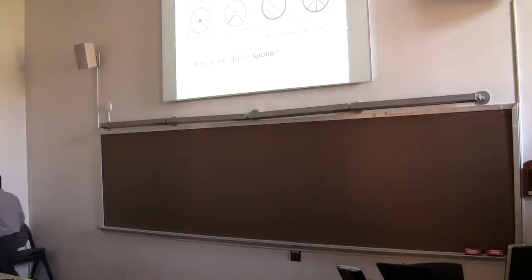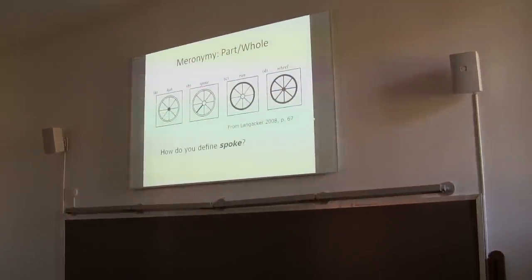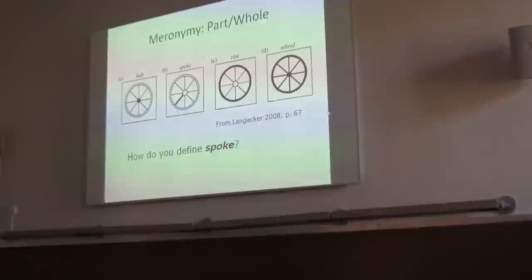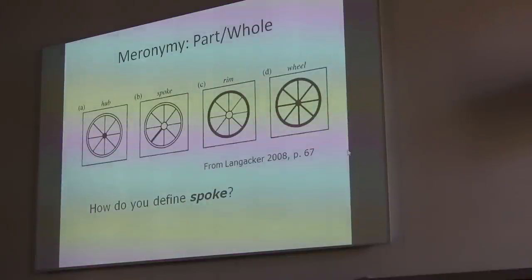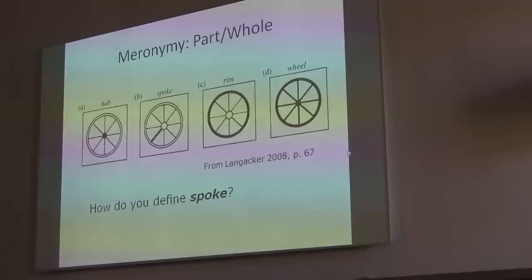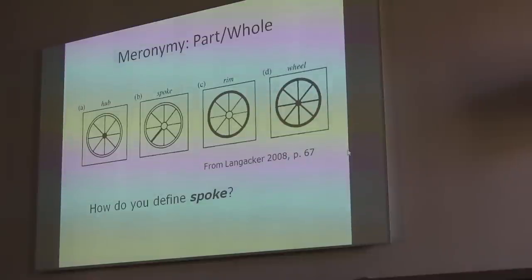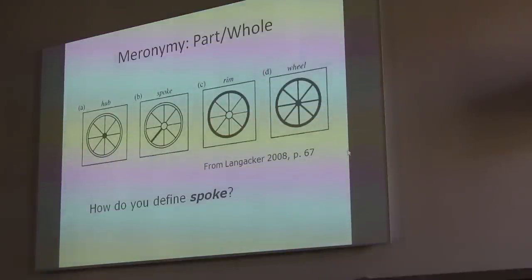The first relationship we want to talk about is meronymy — part and whole. You can see a wheel here, and talk about all its parts: hub, spoke, rim. You need to know what a wheel is to talk about the parts. It's important to understand the whole to understand the part. That is a way in which you talk about things that allows us to make sense. You talk about a finger and you have in your head, at a background level, the notion of a hand. That's the relationship of meronymy.